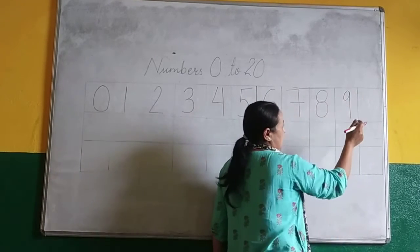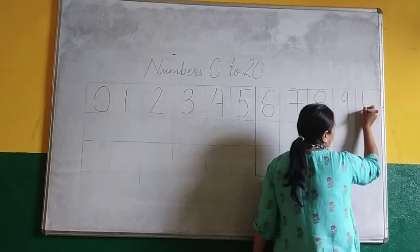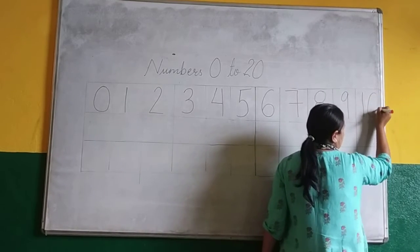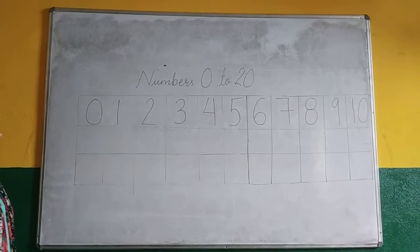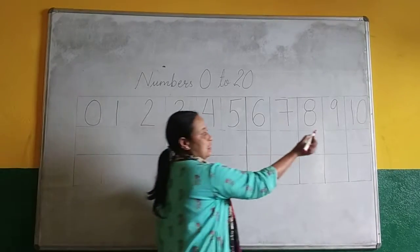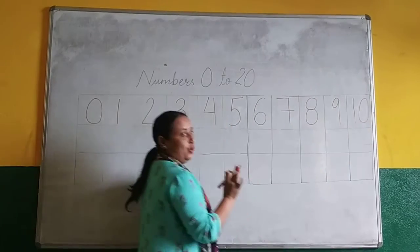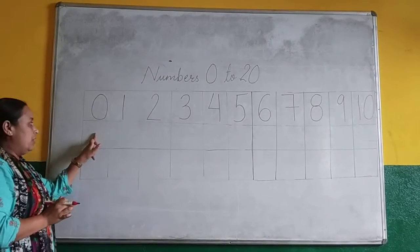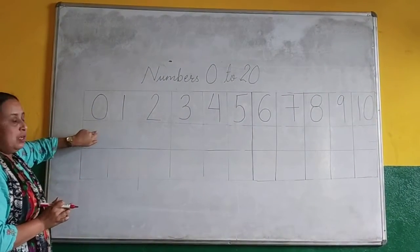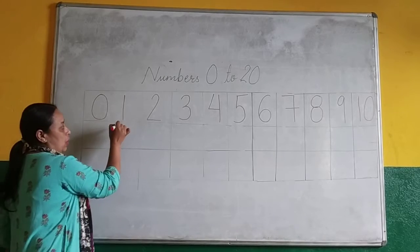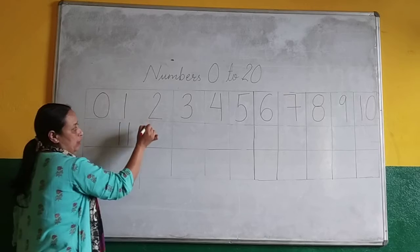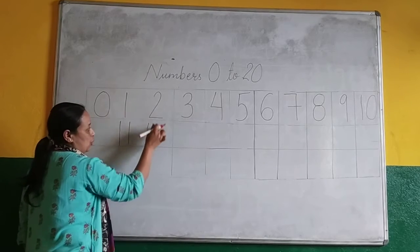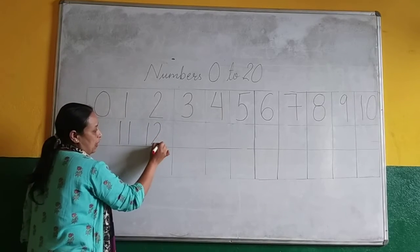And last number is number 1, 0, 10. Again. Then when you finish 1, 0, 10. Go to next line. Understood? You have to leave this box. Go here. Write down 1, 1, 11. Again. Write this box. 1, 2, 12. Understood?